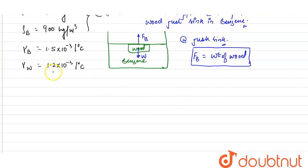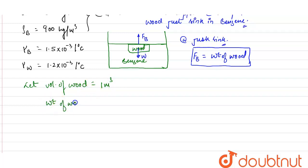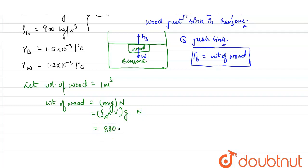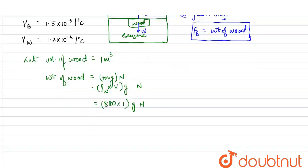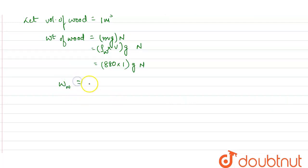Let the volume of wood be 1 m³. The weight of wood will be mg. Since mass equals density times volume, weight of wood = 880 × 1 × g = 880g newtons. Let this be equation number 1.